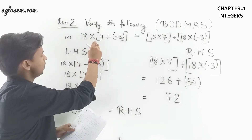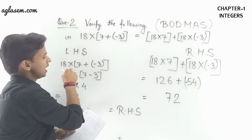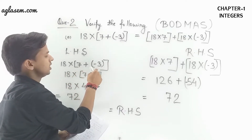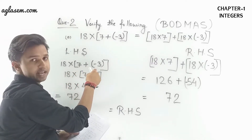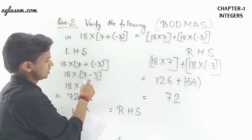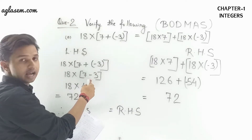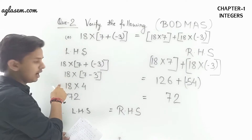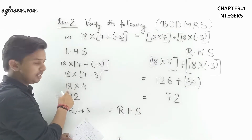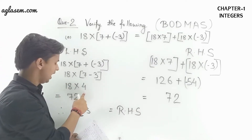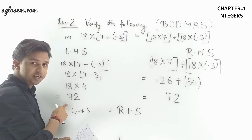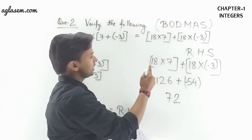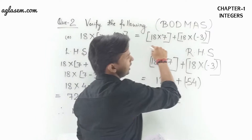So 18 × (7 + (-3)): plus minus makes minus, so 7 minus 3 gives you 4. Then 18 × 4 = 72. So this was your left hand side. Now coming to the right hand side.